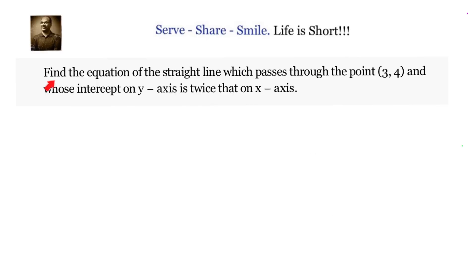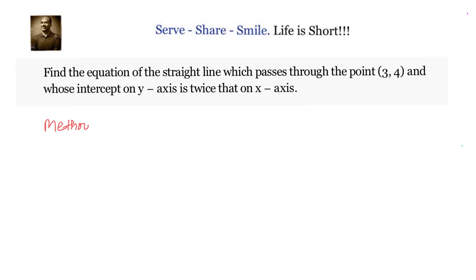Hello friends, welcome back. Let's look at this problem related to 10th grade / 11th grade coordinate geometry. Find the equation of the straight line which passes through the point (3, 4) and whose intercept on the y-axis is twice that on the x-axis.